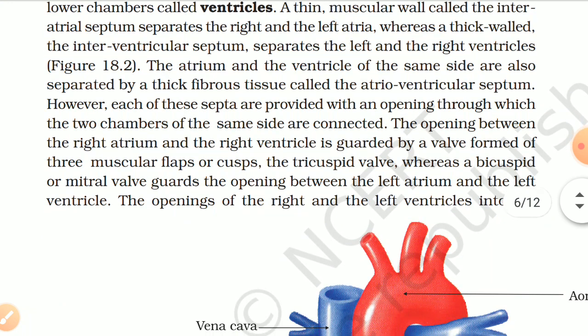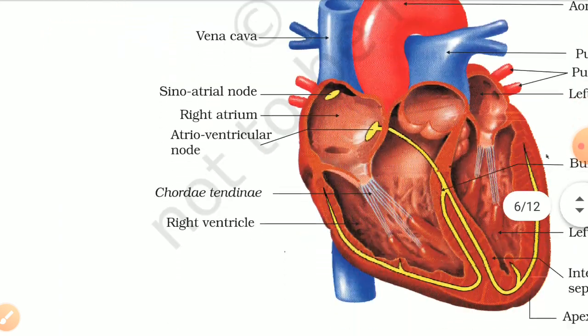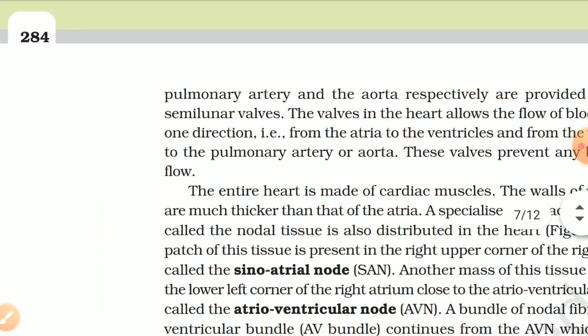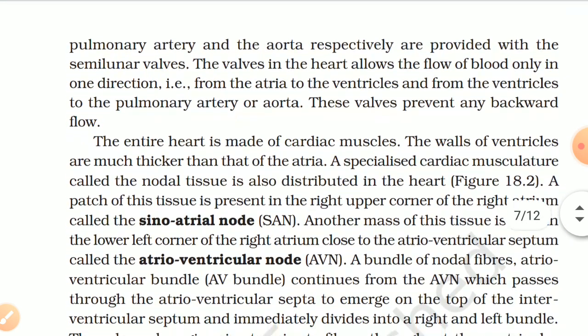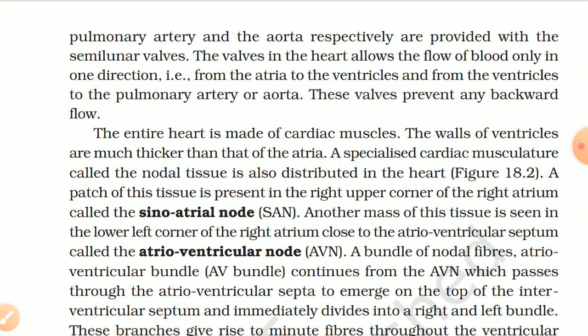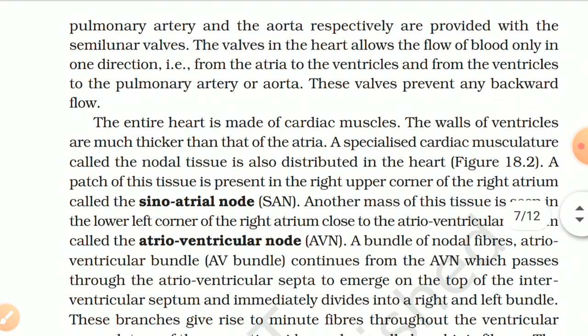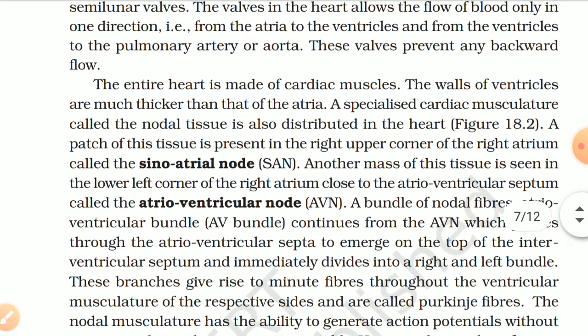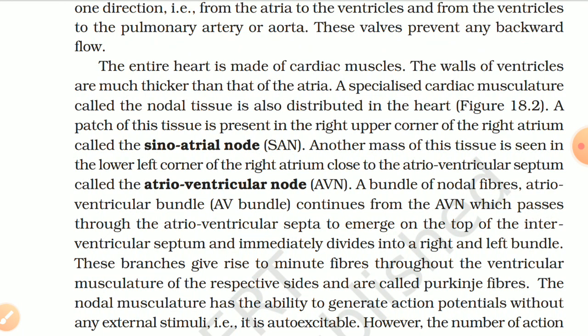The opening between the right atrium and the right ventricle is guarded by a valve formed of three muscular flaps or cusps — the tricuspid valve — whereas a bicuspid or mitral valve guards the opening between the left atrium and the left ventricle. The openings of the right and left ventricles into the pulmonary artery and aorta respectively are provided with semilunar valves. The valves allow blood flow only in one direction — from atria to ventricles and from ventricles to the pulmonary artery or aorta — and prevent any backward flow. The walls of the ventricles are much thicker than those of the atria.